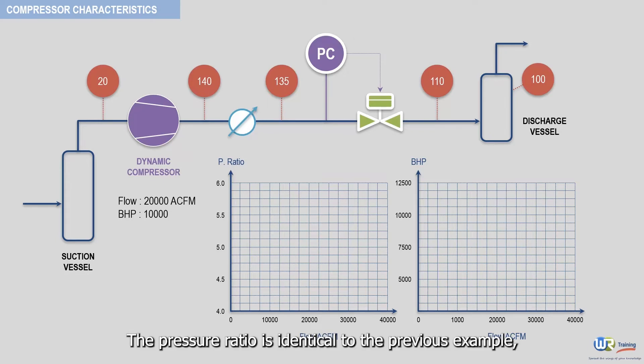The pressure ratio is identical to the previous example, since the suction and discharge pressures did not change. This pressure ratio is equal to 4.45. As a result, the first operating points corresponding to these conditions are plotted as follows.